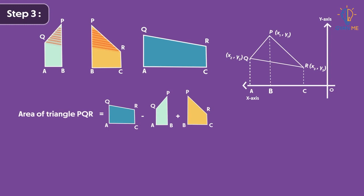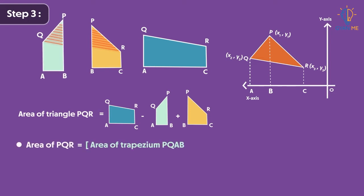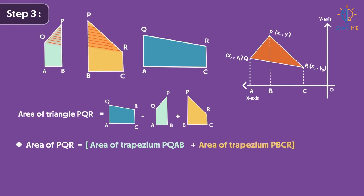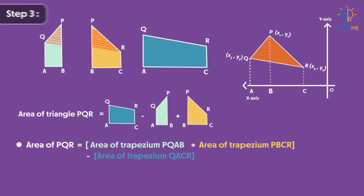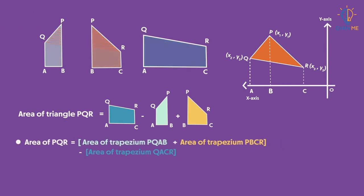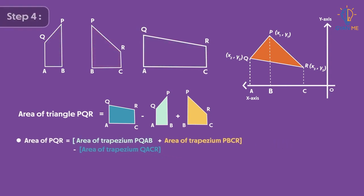Step 3: The area of triangle PQR is calculated as: area of triangle PQR = area of trapezium PQAB + area of trapezium PBCR − area of trapezium QACR. Step 4: Now let's calculate the areas of all three trapeziums.